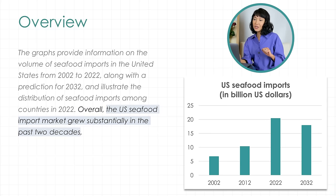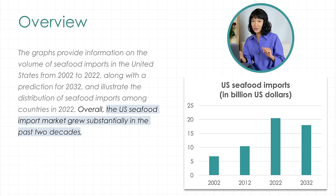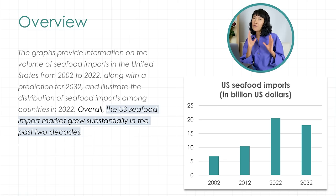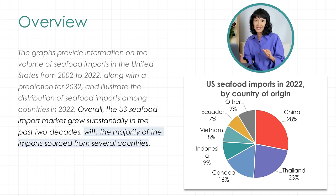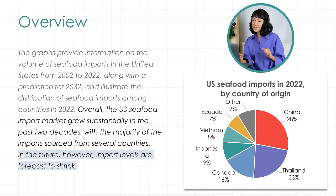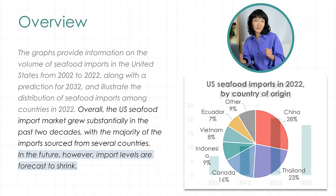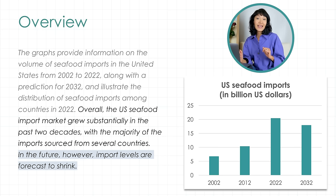Let's look at the first chart. The US seafood import market grew substantially in the past two decades. On the chart, you can see that imports increased a lot between 2002 and 2022. As we are in 2023, we can say 'in the past two decades.' I'm not giving numbers, just an overview of the trend. I continue the same sentence with an overview of the pie chart: 'with the majority of the imports sourced from several countries.' I'll name these countries in my body paragraphs. And the last bit: 'In the future, however, import levels are forecast to shrink' — a reference to the forecast on the first chart. I simply say that imports will go down, the trend will change.